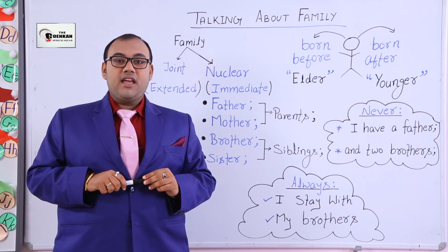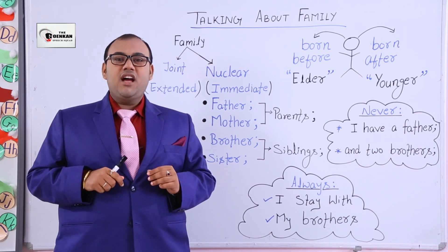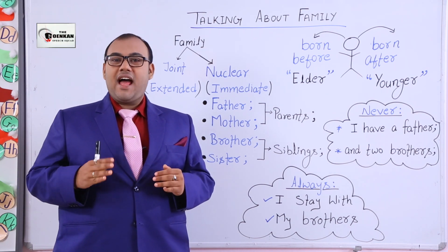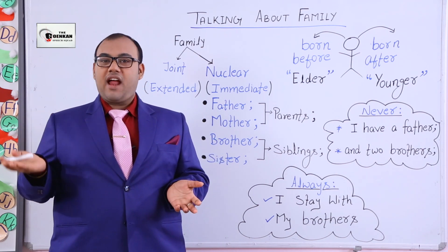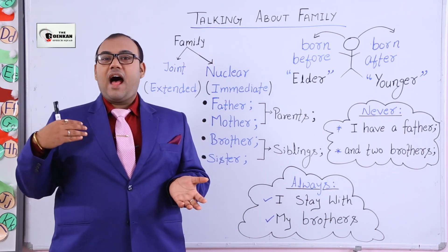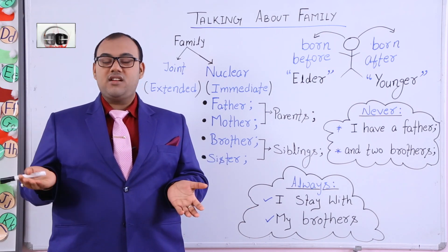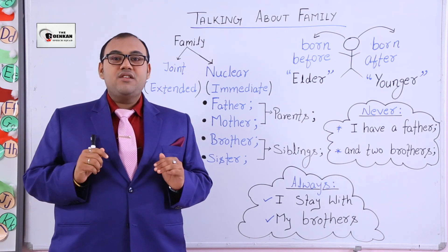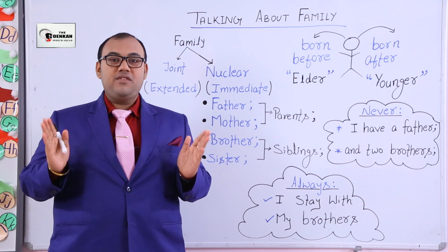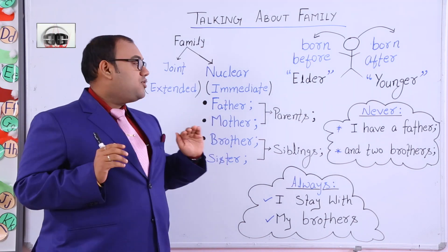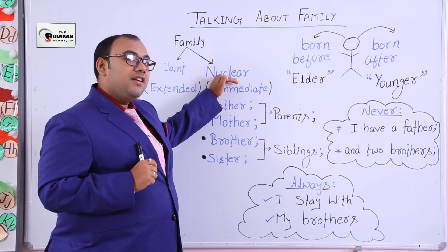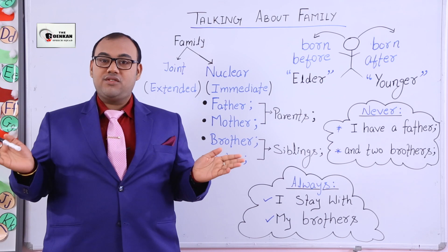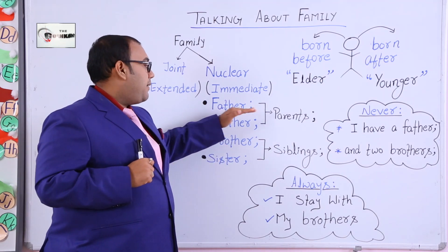Friends, do remember, if somebody asks you about your family you should not elaborate too much. Saying I have two brothers, three sisters, a grandfather, grandmother, two cousins, two uncles, two aunties — that is not the right way to talk about your family. We need to talk about our immediate family or nuclear family.